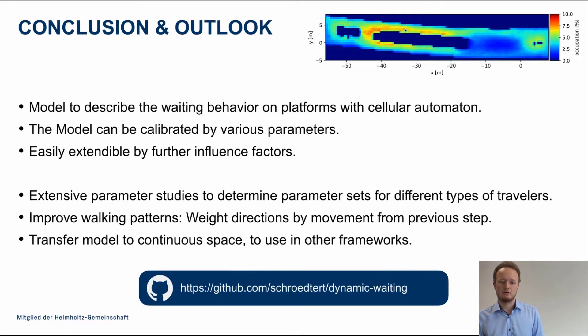Now to sum the talk up. We developed a model to describe the waiting behavior on platforms with cellular automata. This model can be easily calibrated, or can be calibrated by various parameters, and can be further extended. If you need something else, you can add, for example, an attraction field, or a repulsor field, for example, for the smoking area. For some passengers it might be attracting, for others, they won't stand close to it. Things which are missing currently are more extensive parameter studies, to determine parameter studies for different types of travelers. Commuters who are very familiar with the train station do behave differently than passengers with luggage, or are not that familiar with taking the train at all.